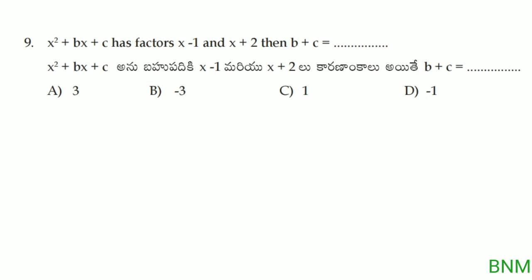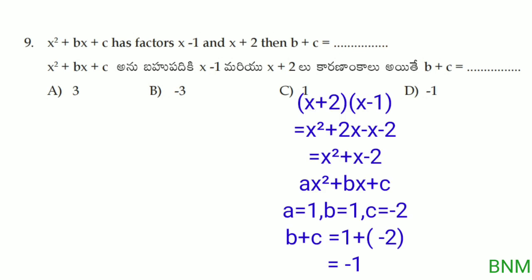Next: x squared plus bx plus c has factors x minus 1 and x plus 2. Find b plus c. Expanding (x minus 1)(x plus 2) gives x squared plus x minus 2. Comparing with x squared plus bx plus c, we get b equals 1 and c equals minus 2. So b plus c equals 1 plus (minus 2), which equals minus 1. That is the right answer.